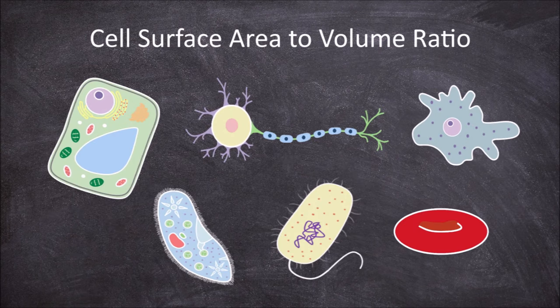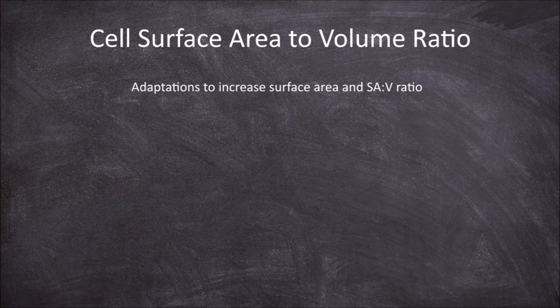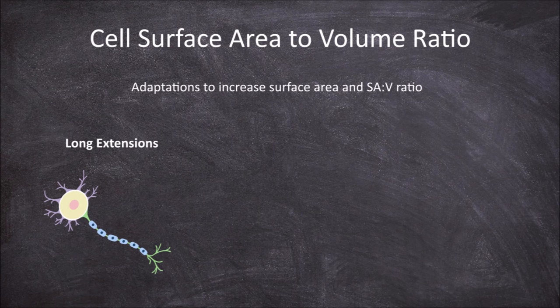Cells are varied in shape, and some are adapted to increase the surface area and the surface area to volume ratio. One type of adaptation is forming long extensions, which increase the surface area of the cell and in turn the surface area to volume ratio. This is seen in nerve cells, where the cell has many thin extensions branching out from the cell body called dendrites.